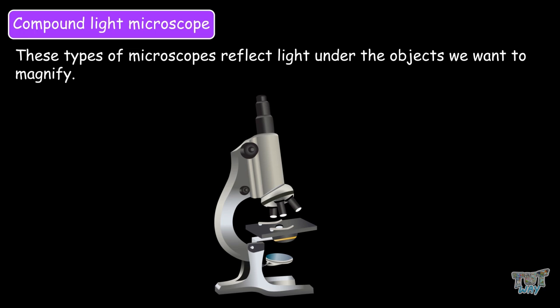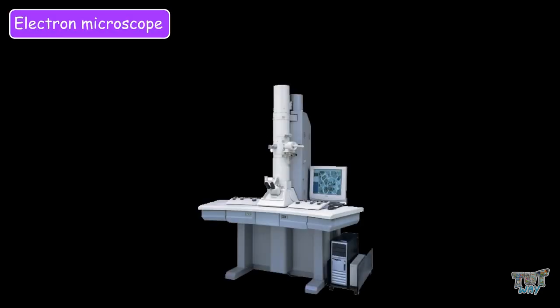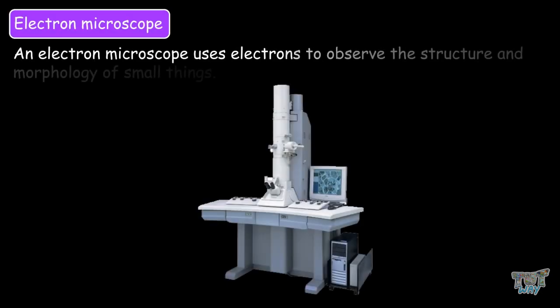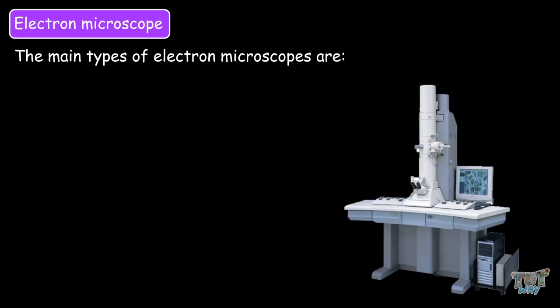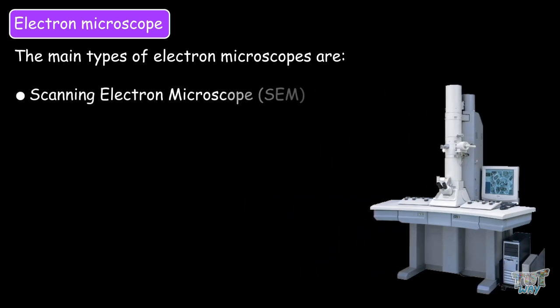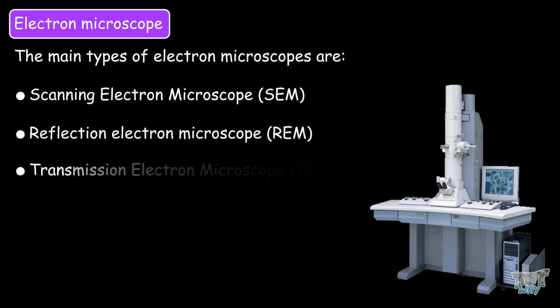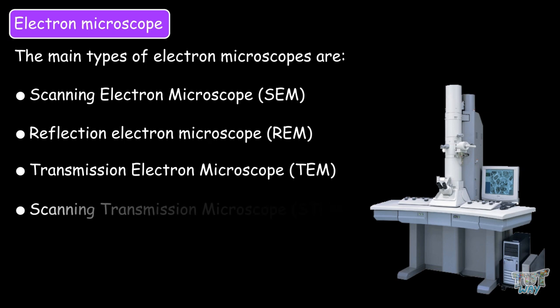Other types of microscope is the electron microscope. An electron microscope uses electrons to observe the structure and morphology of smaller things. The main types of electron microscopes are scanning electron microscope, reflection electron microscope, transmission electron microscope, and the scanning transmission microscope. So these are all the types of electron microscopes. They are highly advanced microscopes.